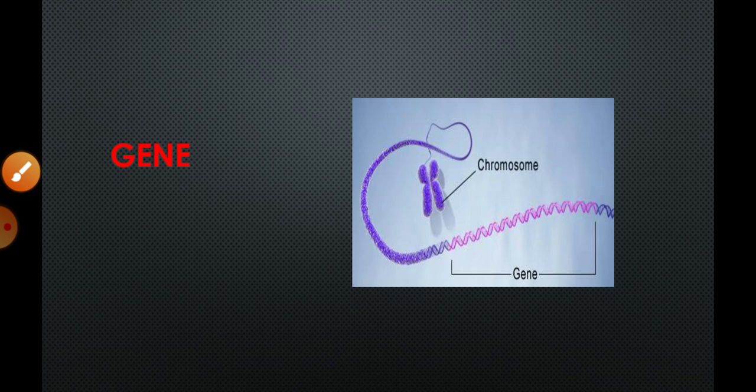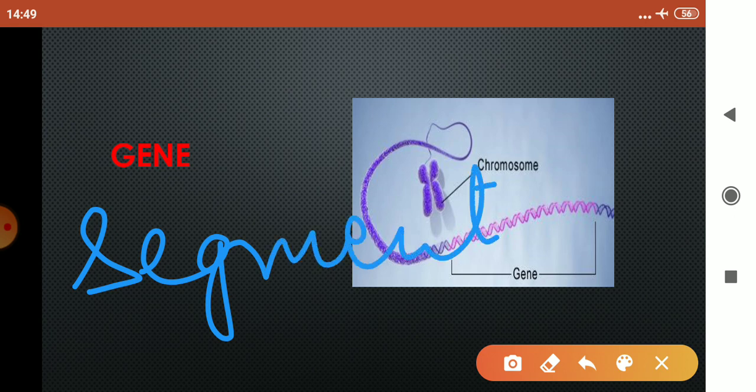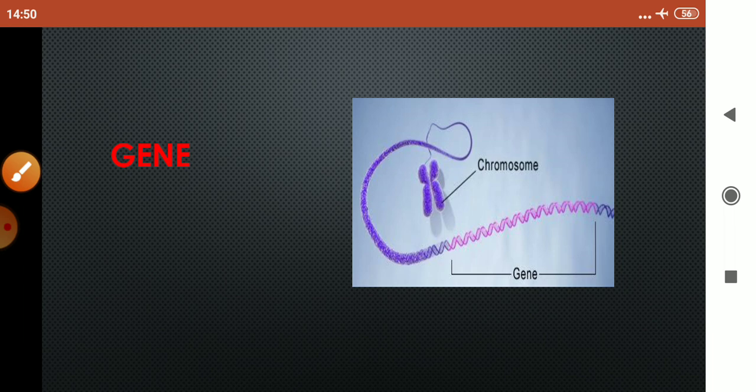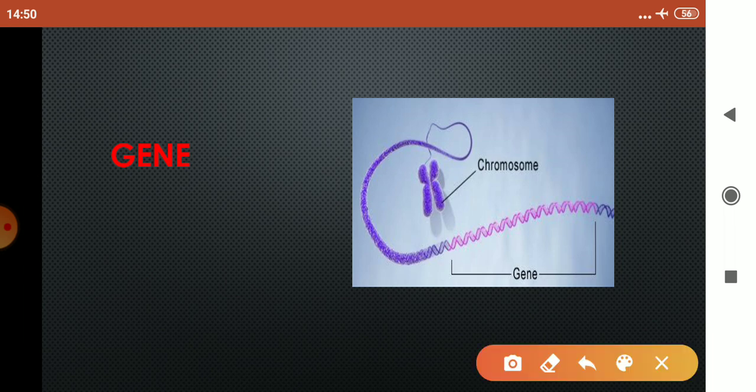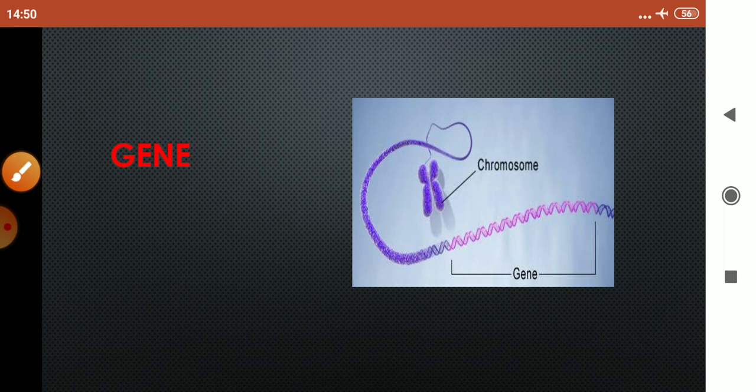Now children let's start with the gene. Gene is a segment of DNA that codes for a particular protein or that expresses itself. Gene DNA ka ek aisa segment hai, ek aisa part hai, jo apne aap ko express karta ho. So children how you are going to understand it that whether a gene is expressing or not.